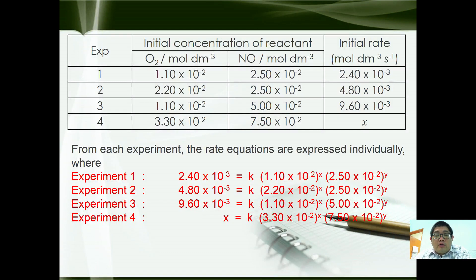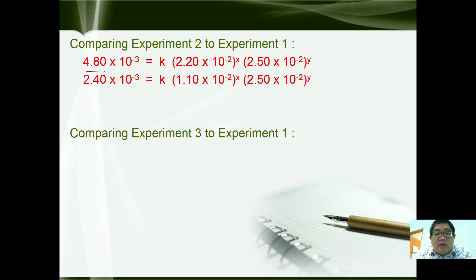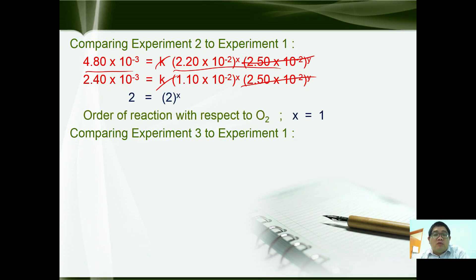Now in order to get the order of reactions for x and y, we need to compare experiment to experiment. To get order of reaction with respect to O₂, we compare experiment 1 and experiment 2. In order to get the order of reactions for NO, we compare experiment 1 and experiment 3. When experiment 2 and 1 are compared, you divide between these two. K and K can be cancelled, and this one and this one can be cancelled. So eventually you will find out that 2 = 2ˣ, so x equals 1. In other words, it is first order with respect to O₂.